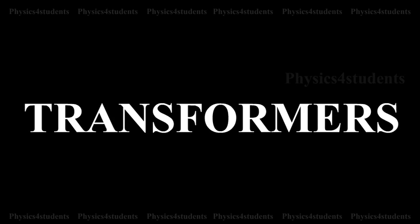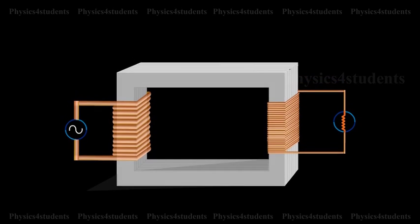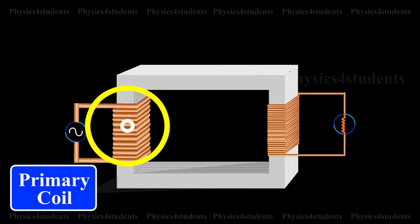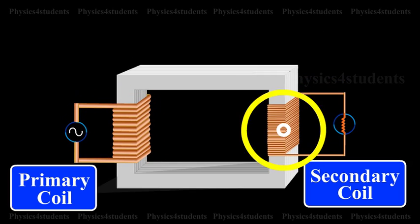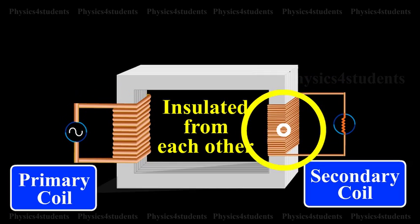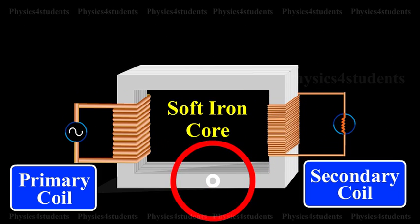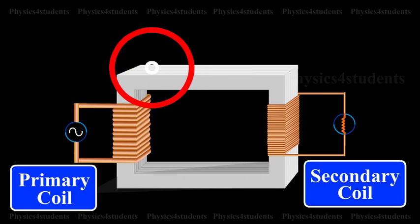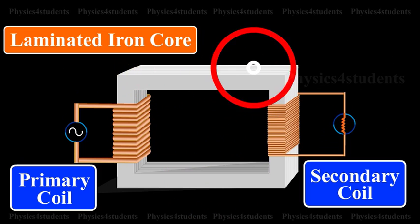Transformer. A transformer consists of primary and secondary coils, insulated from each other, wound on a soft iron core. To minimize eddy currents, a laminated iron core is used.